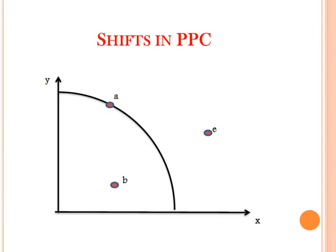The economic problem is a problem of relative scarcity, where the available resources are not enough to satisfy all human wants. As long as the resources are limited, choice must be made, and this implies the existence of cost.